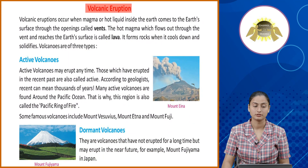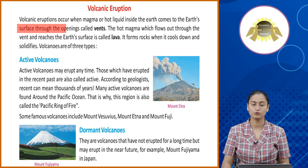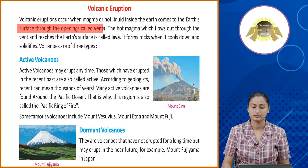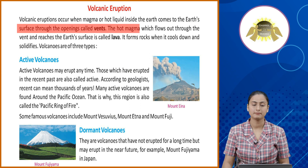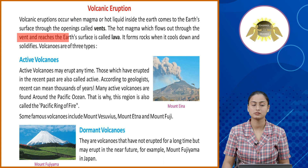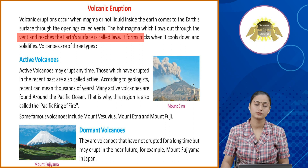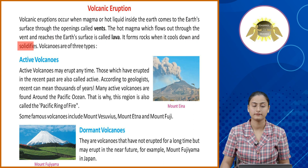Volcanic eruptions occur when magma or hot liquid inside the earth comes to the earth's surface through openings called vents. Hot magma which flows out through the vent and reaches the earth's surface is called lava. It forms rocks when it cools down and solidifies.